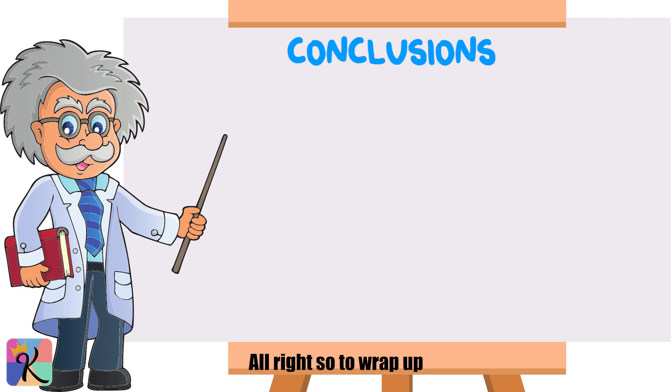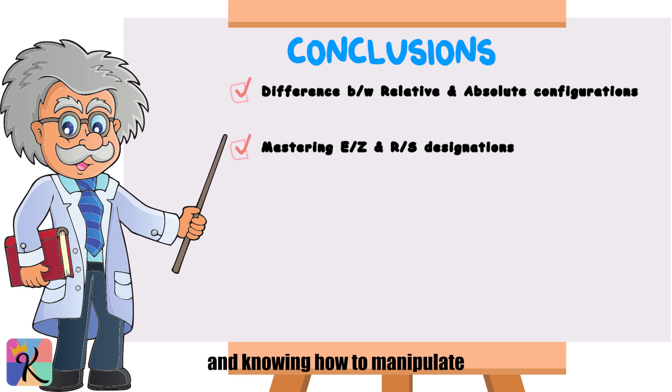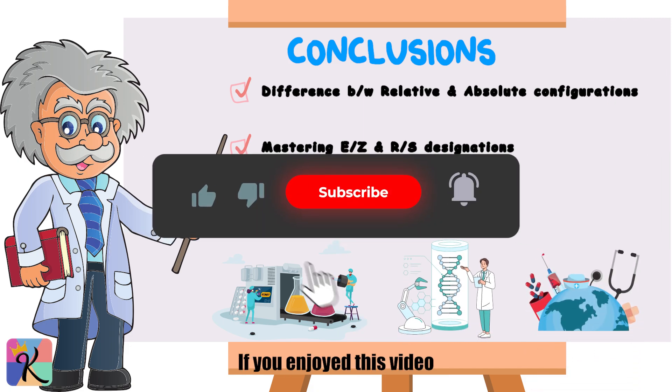Alright, so, to wrap up, understanding the difference between relative and absolute configurations, mastering E and Z and R and S designations, and knowing how to manipulate Fischer projections are crucial skills in organic chemistry and beyond. These concepts aren't just academic. They have real-world applications that can impact medicine, biotechnology, and healthcare.